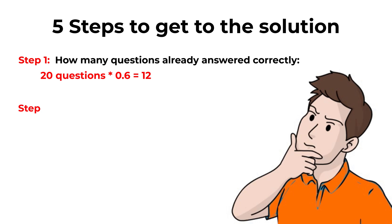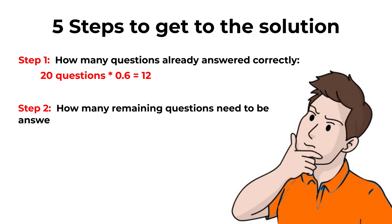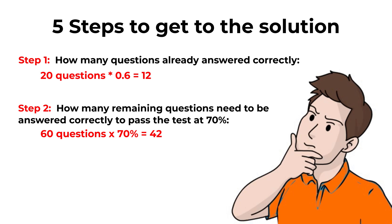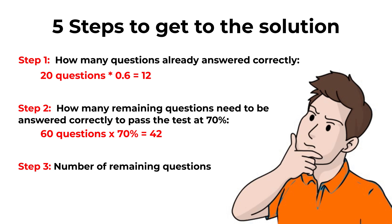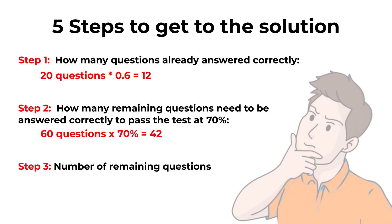Next, we determine how many questions need to be answered correctly to pass at a 70% rate. With 60 total questions at 70%, that means 42 questions must be answered correctly. Then we calculate remaining questions: 60 − 20 = 40 questions are still remaining.